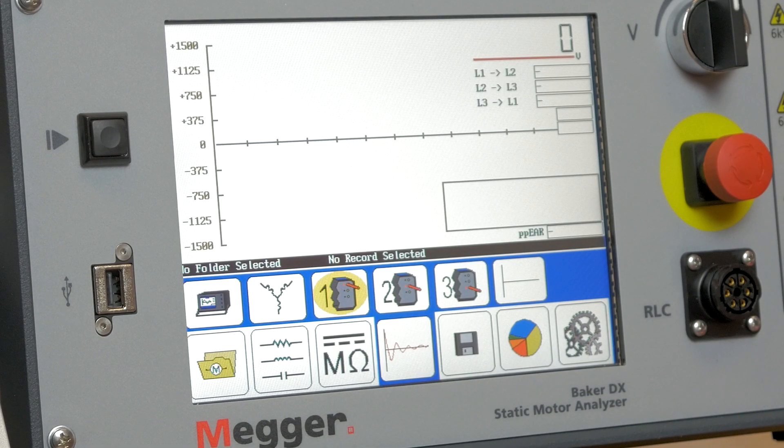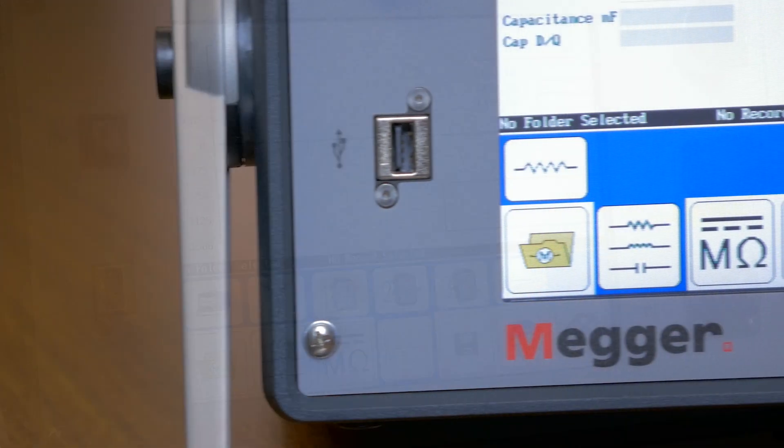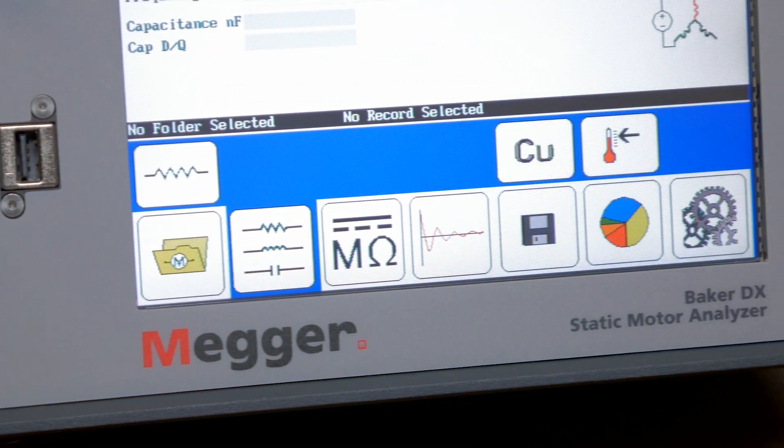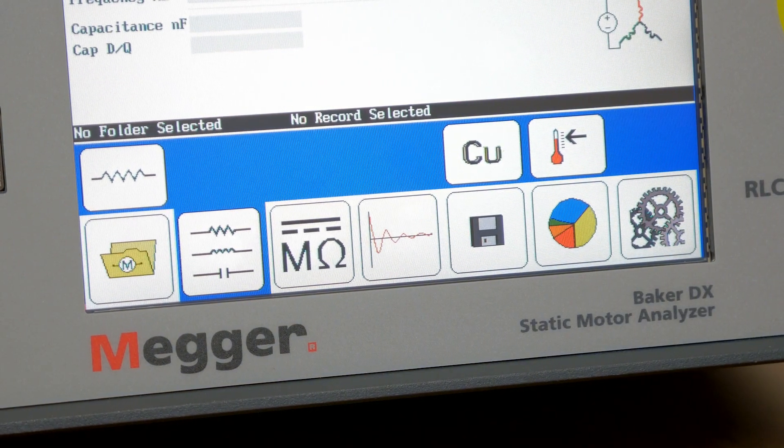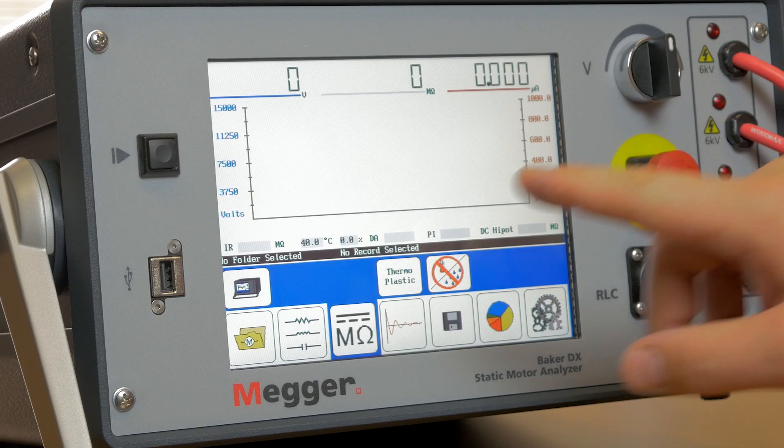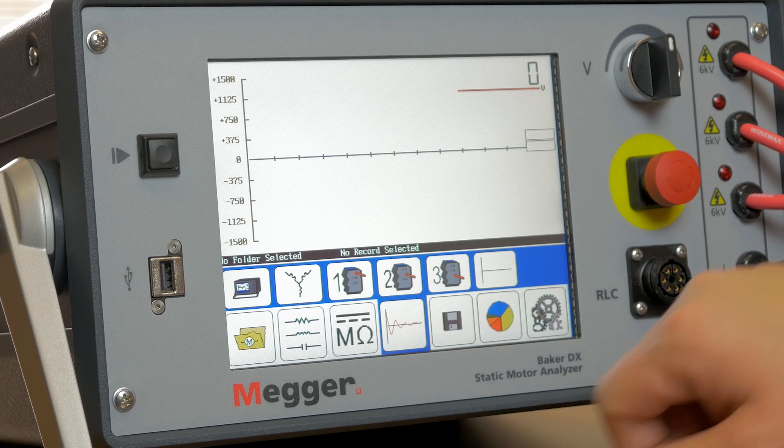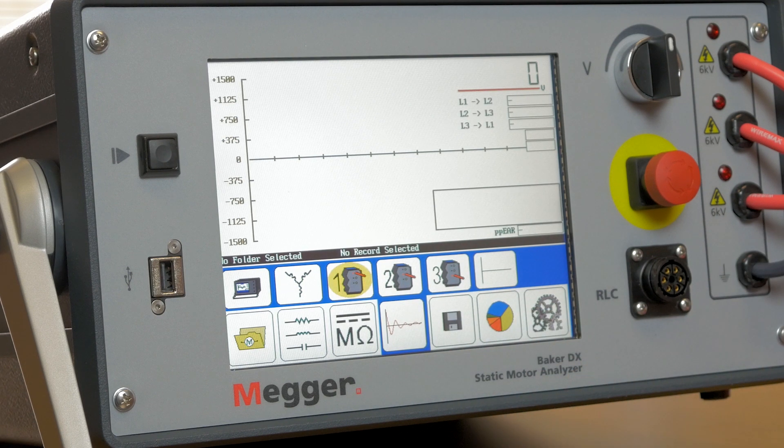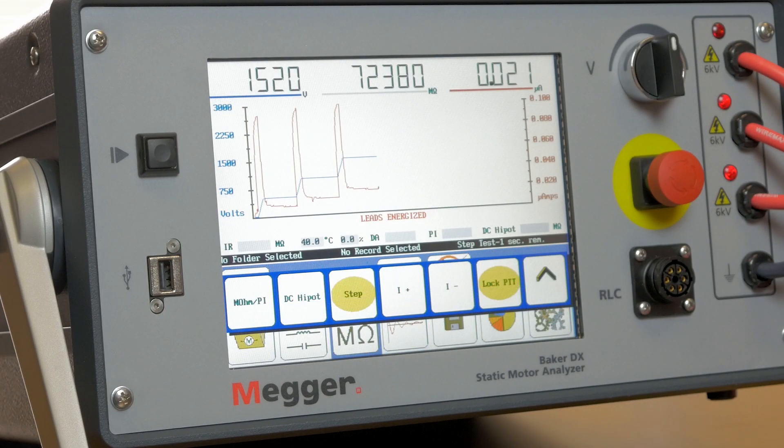Let's take a quick look at the Baker DX static tester user interface. The lowest row of icons shows the test type or file location and settings. These are arranged for a left to right flow of all the test steps. The top row of icons shows the configuration of the test selected in the bottom row. The large upper area of the display shows the test results.